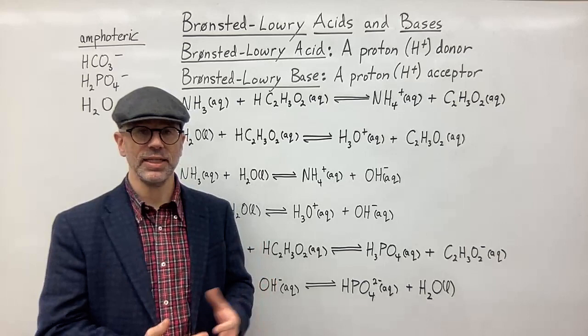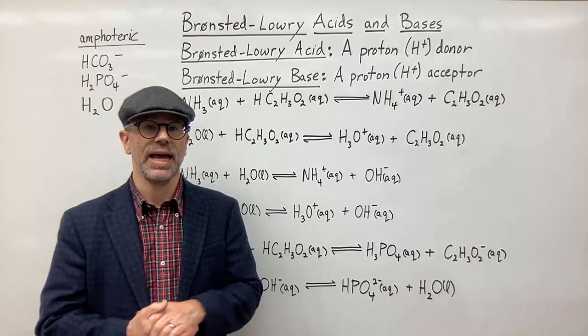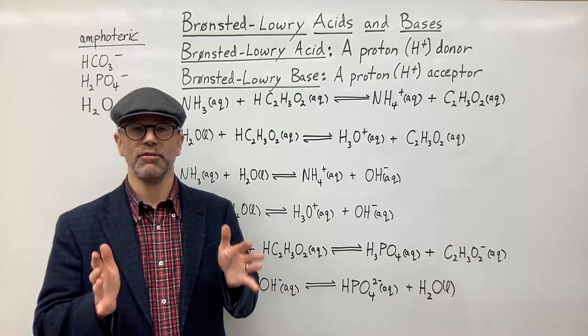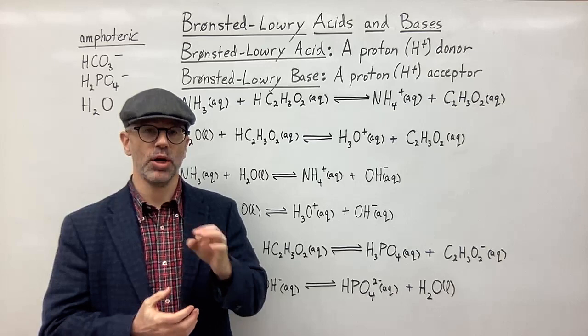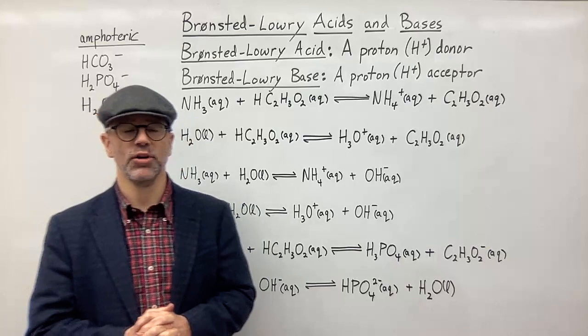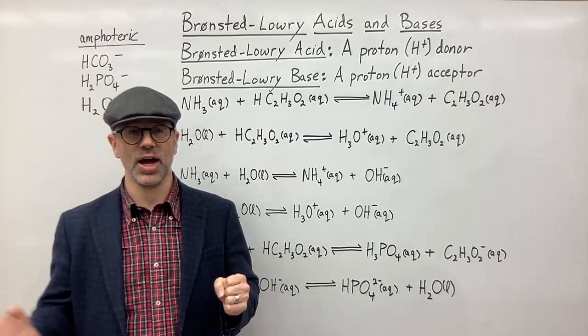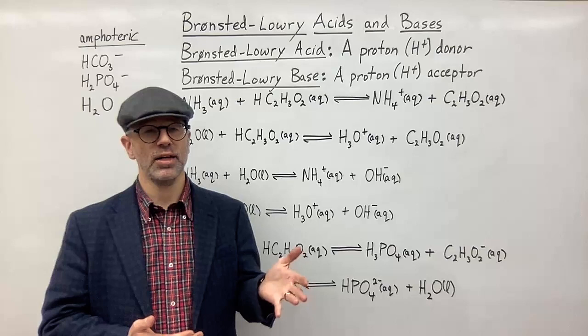For the Bronsted-Lowry definition of an acid and base, we're going to focus on what is called the proton. A proton is just basically an H+ ion. If you think of a hydrogen atom, your typical hydrogen atom has one proton in the nucleus and one electron in an orbital outside the nucleus. So when you remove that one electron, you just have the proton left. H+ is basically the hydrogen atom with the electron removed — it's just a proton.